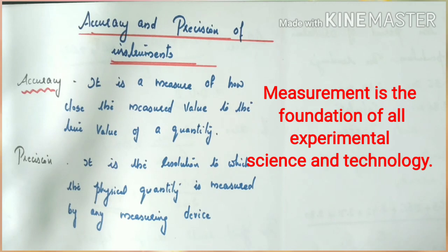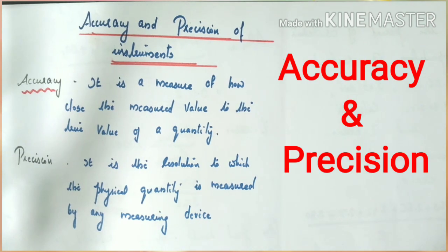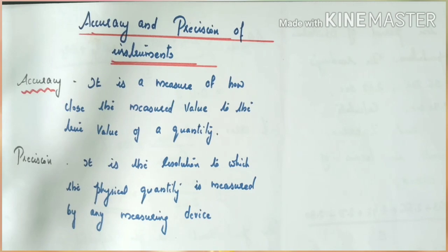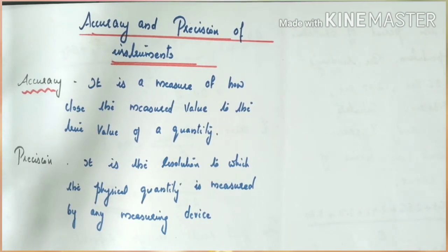Measurement is the foundation of all experimental science and technology. Now I am going to introduce two terms: accuracy and precision of instruments. What is accuracy? It is the measure of how close the measured value is to the true value of a quantity. So closeness of the measured value to the original or true value of the physical quantity is called accuracy.